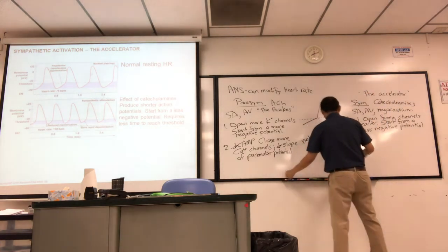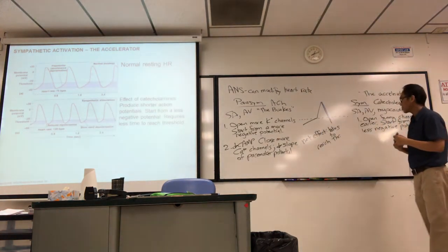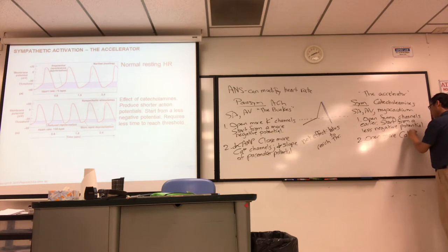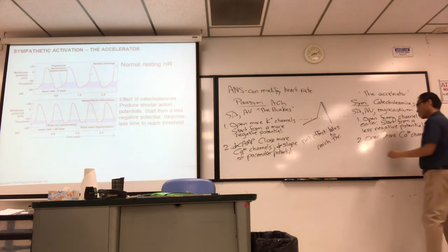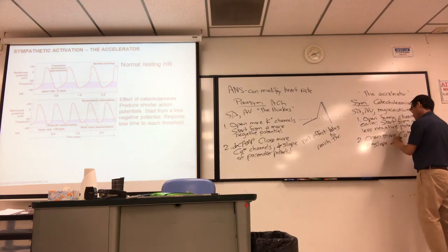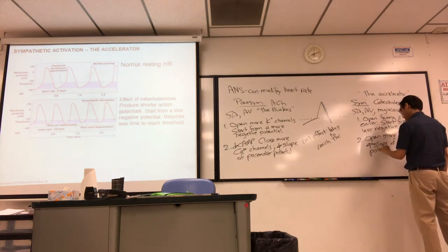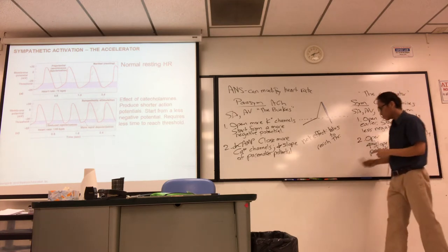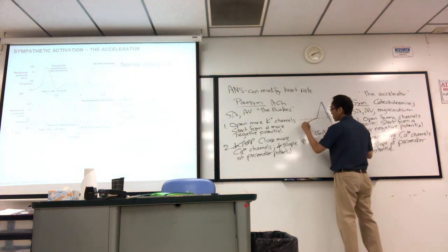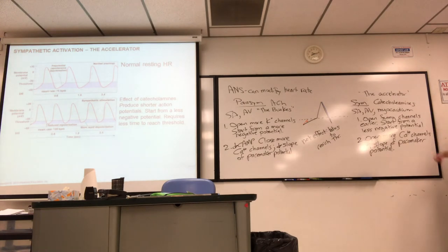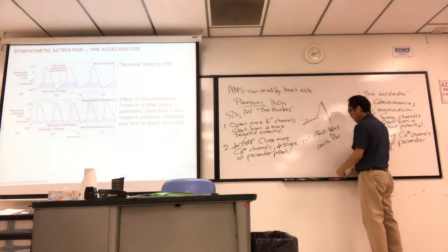When you repolarize, you kind of stop short because you open these channels earlier. You start from less negative. But the effect of catecholamines is to also open up more calcium channels. And so that will kind of increase the slope of your pacemaker potential. So to increase the slope, that means you make it steeper. So the effect of that is, the net effect of both of these things is, takes less time to reach threshold. You get a tachycardia. Heart rate of 120.